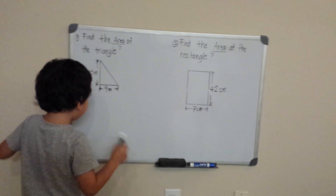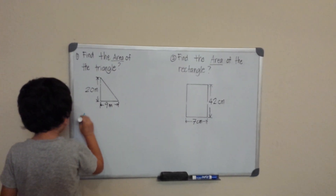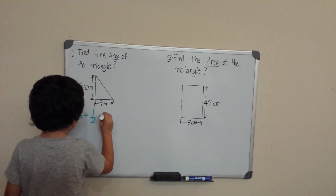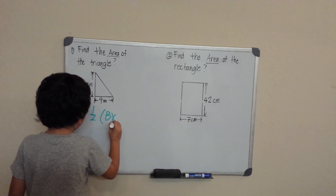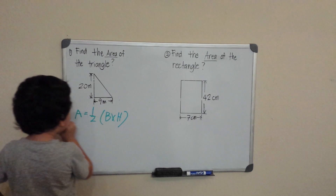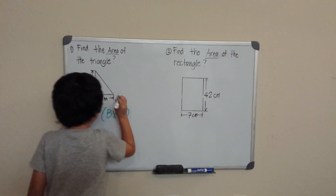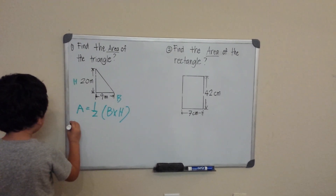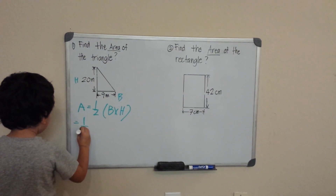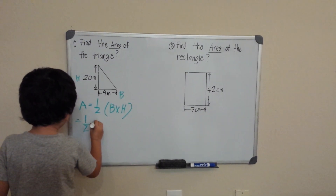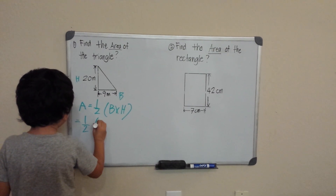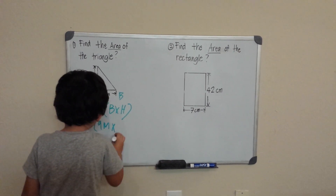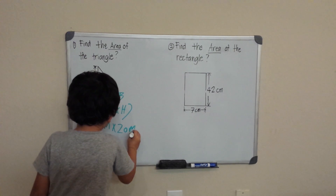What is the area of this triangle? This is the formula. Area equals one half base times height. This is our base. This is our height. So we plug it in: one half and 9 meters times 20 meters.